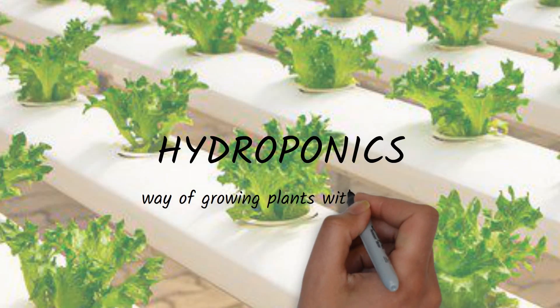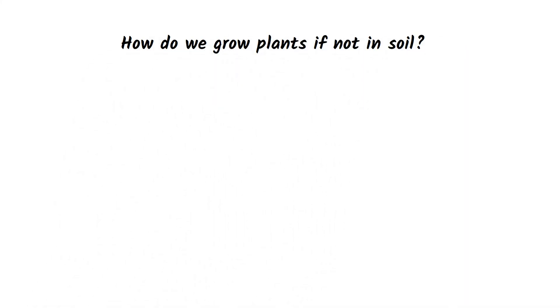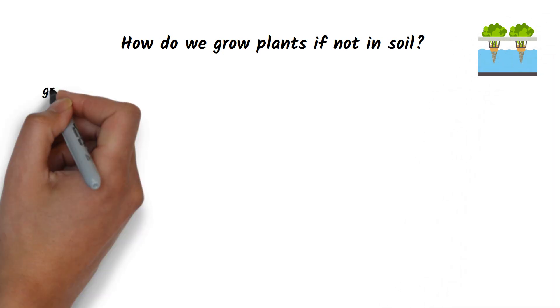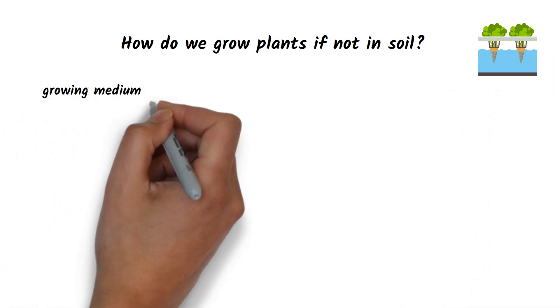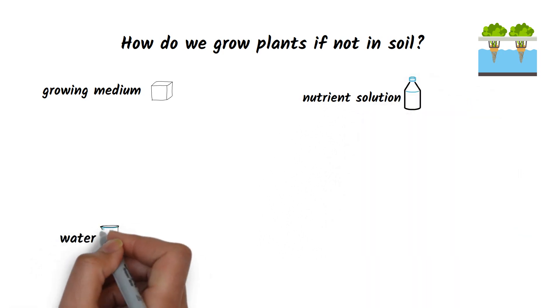In this video we introduce hydroponics, a way of growing plants without soil. So how do we grow plants if not in soil? Put simply, all we need for such growing is a plant, a growing medium to hold the plant in the pot, a nutrient solution and water.